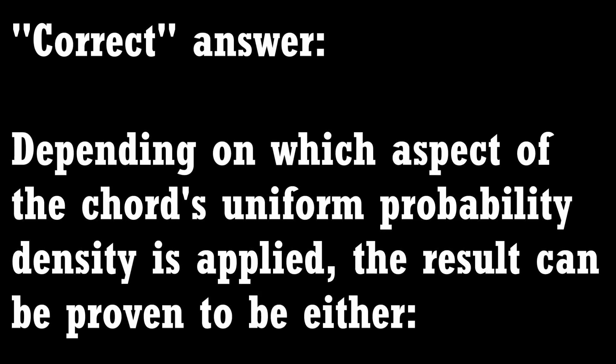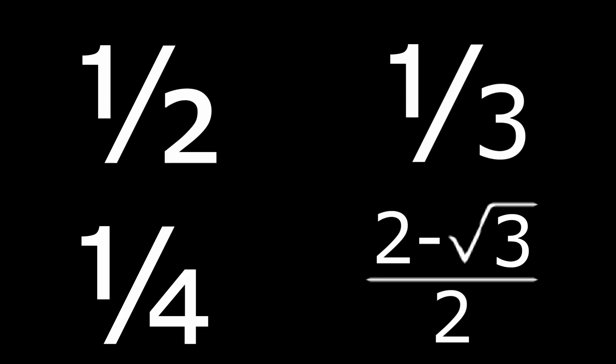And the correct answer is, depending on which aspect of a chord's uniform probability density is applied, the result can be proven to be either a half, a third, a quarter, or two minus root three over two.